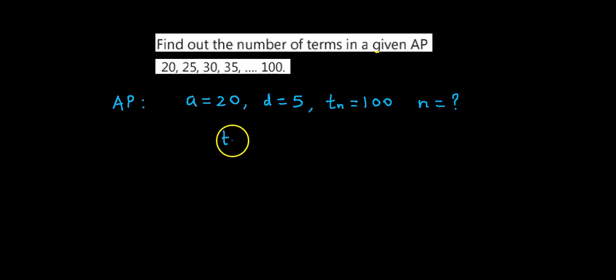Now we know that the formula for Tn is given by a plus (n minus 1) into d. Let us make the substitutions.